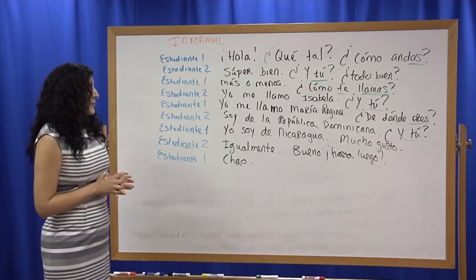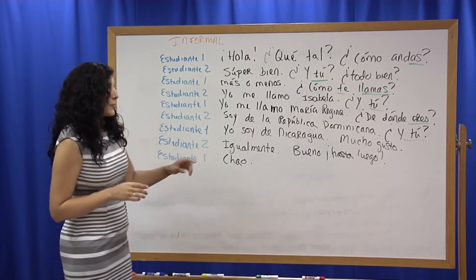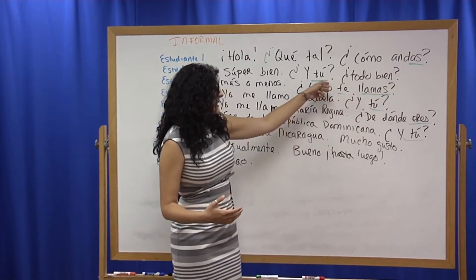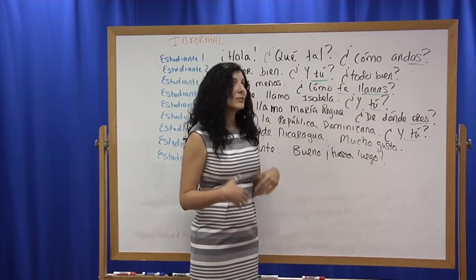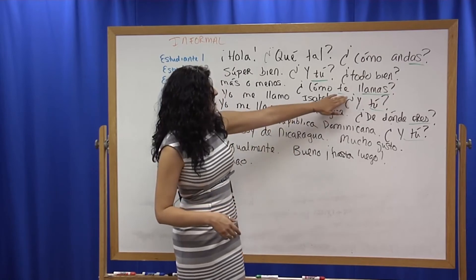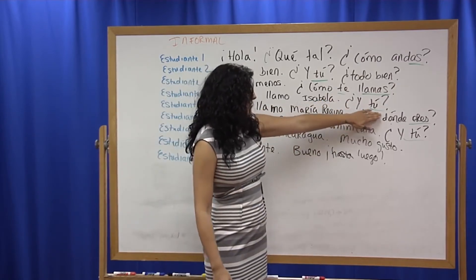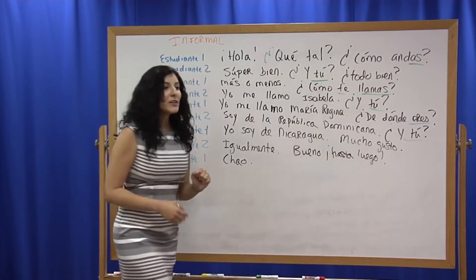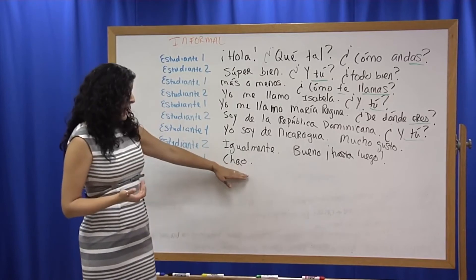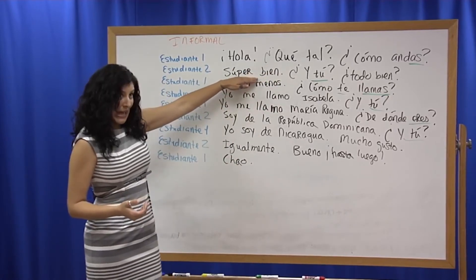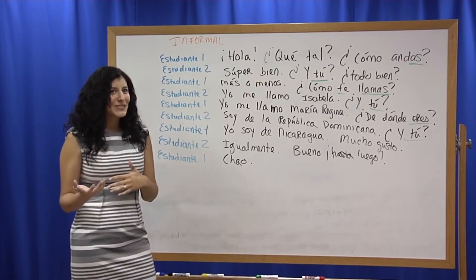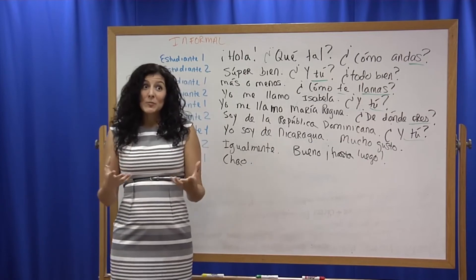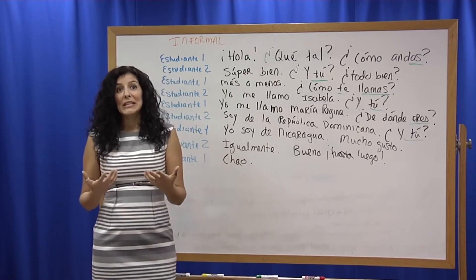Here's the example in which we used the informal in the dialogue. Here we have "andas," indicating that we are in "tú" — the informal. Here we used "y tú" and "te llamas" as opposed to "se," which would indicate the formal. Here we used "te," showing that we are in the informal. Here we also used "tú" — and these contrast with a formal rather than an informal form.